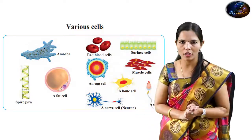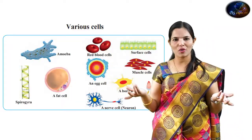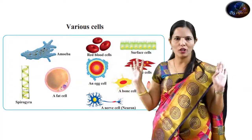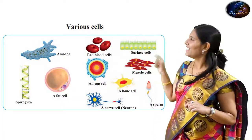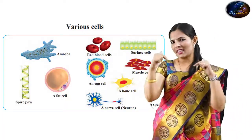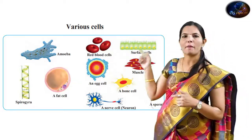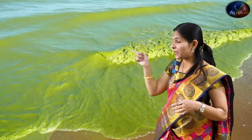Each cell's shape depends on its own function. For example, how is amoeba's shape? Amoeba does not have a specific shape — it can take any shape. Red blood cells (RBCs) have a circular, disc-like shape. Some cells have a spiral shape, like spirogyra.